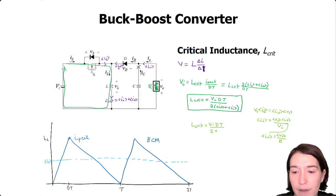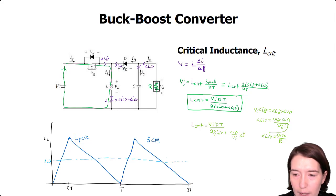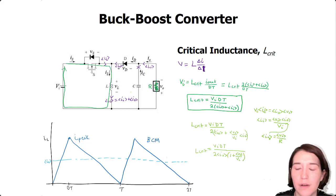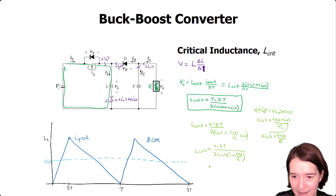Now we can substitute these values in. We put in V_out, and then we substitute the input current expression — V_out times I_out over V_in — along with I_out. Noticing that I_out appears on both sides inside the parentheses, we can simplify, giving an expression with one plus the average output voltage over the input voltage.